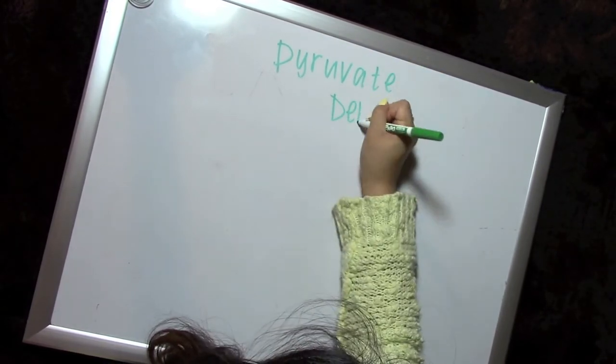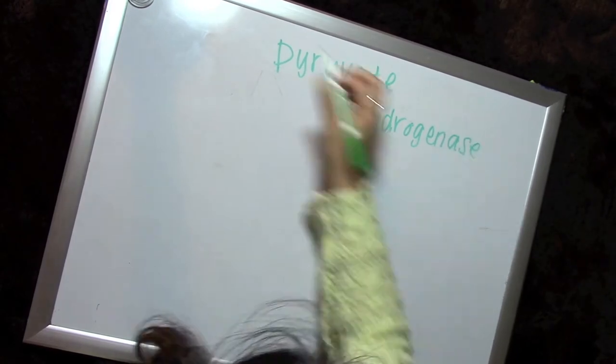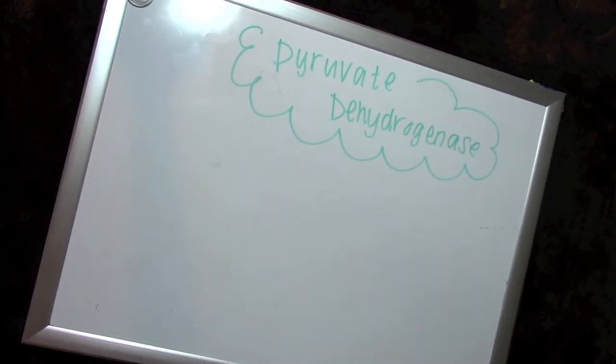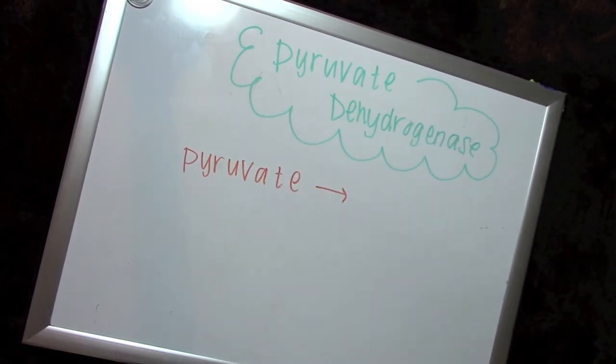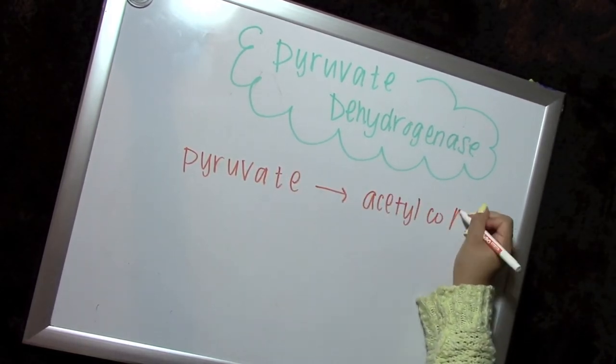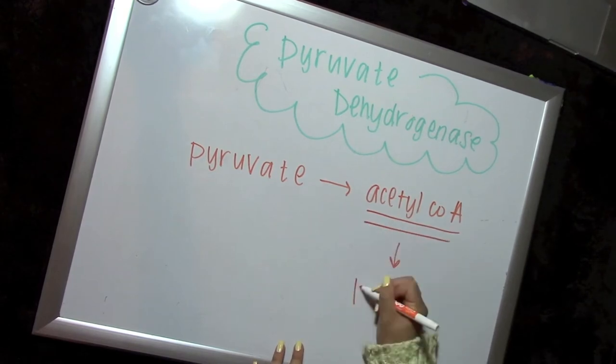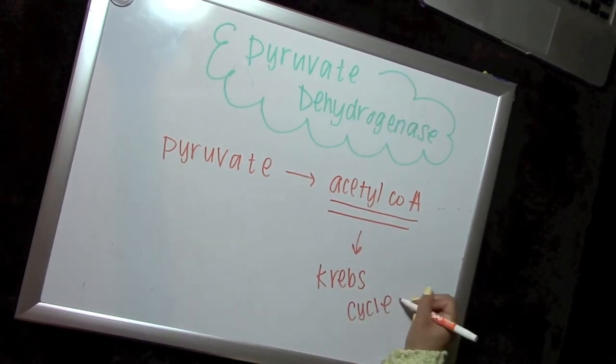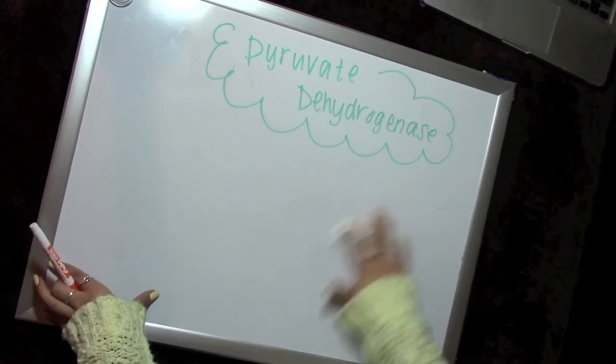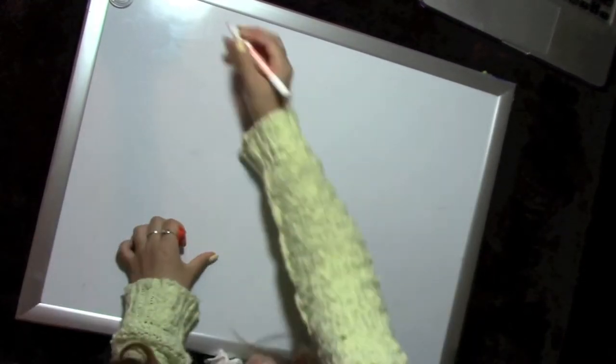So those two pyruvates are put into pyruvate dehydrogenase, which is an enzyme—anything ending with 'ase' at the end is most likely an enzyme when talking about biochemistry. Those two pyruvates are converted into acetyl-CoA, and then we put acetyl-CoA into the Krebs cycle, which is going to be the third step in this long process.